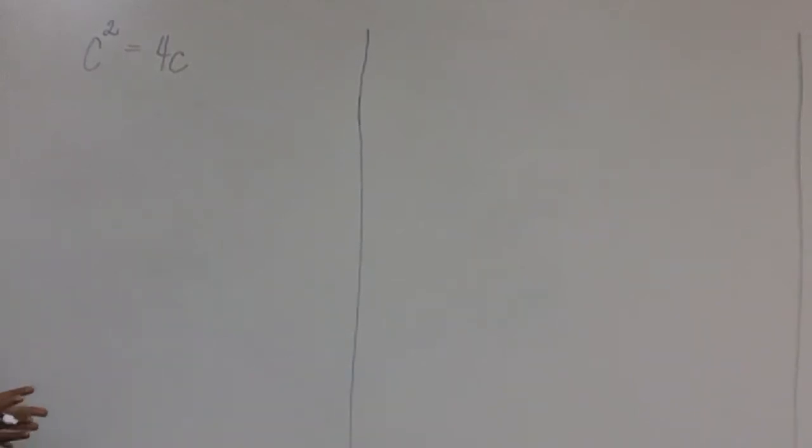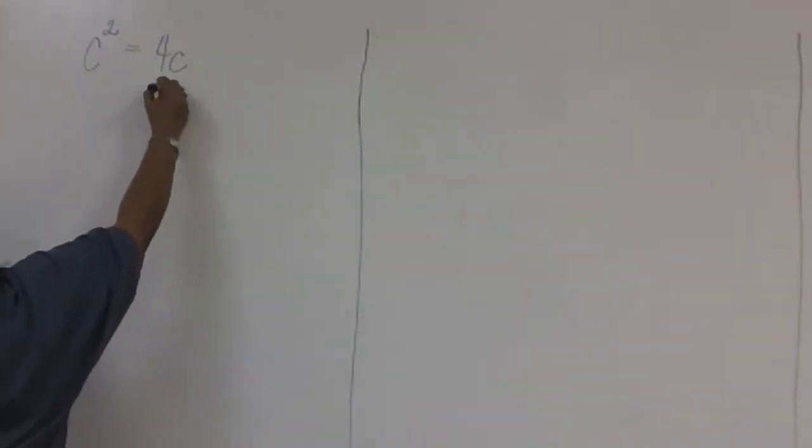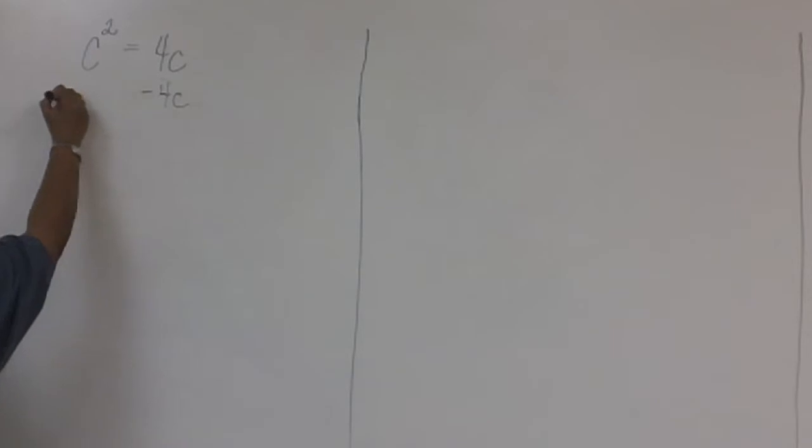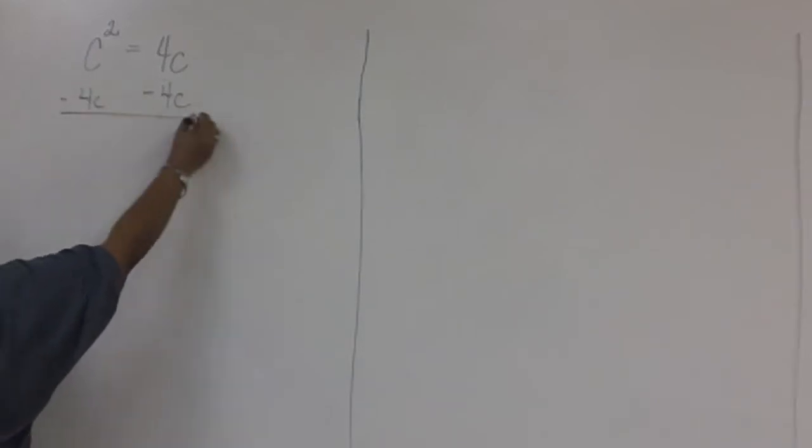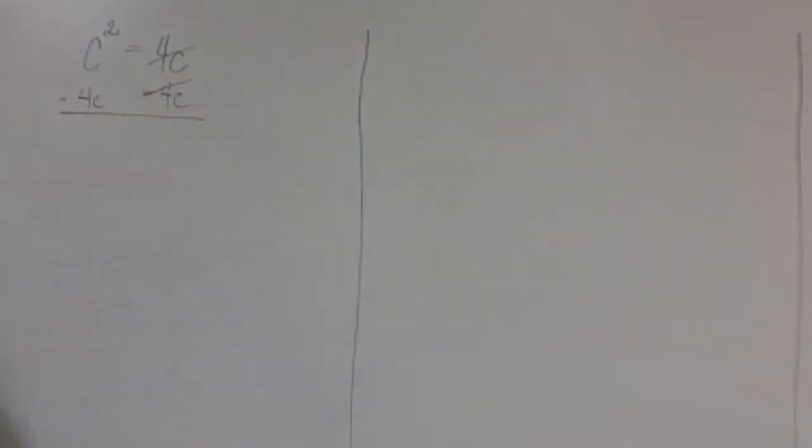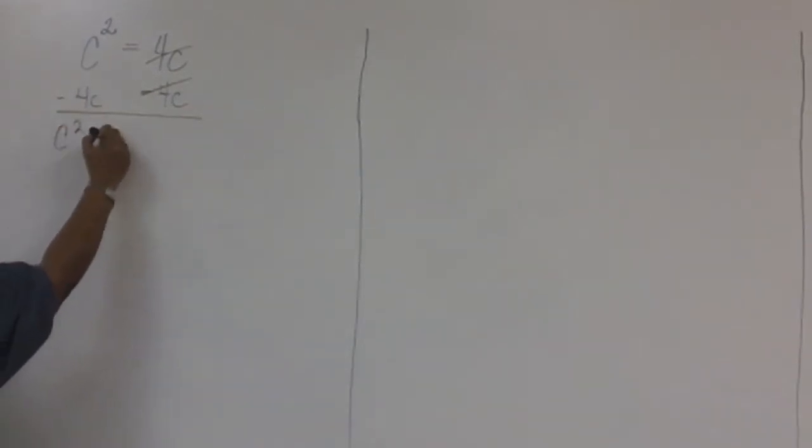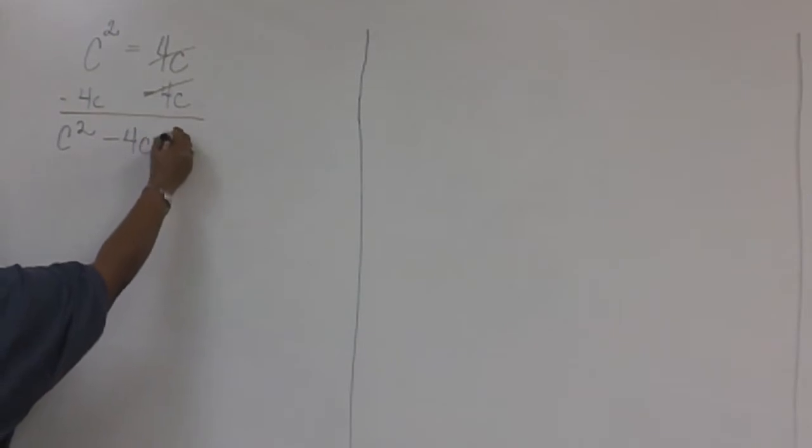Notice that this equation has not been set equal to zero. So that's the first thing we'll do. We'll start by subtracting 4C from both sides. Notice that the right side is now equal to zero. So we have C squared minus 4C equals zero.